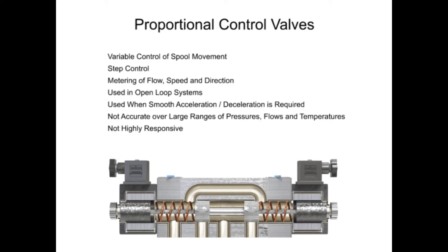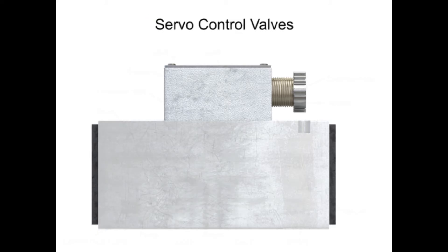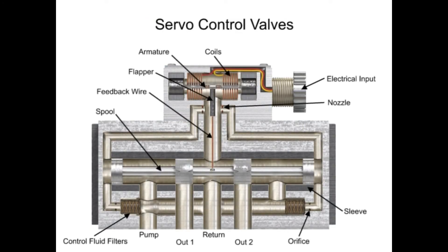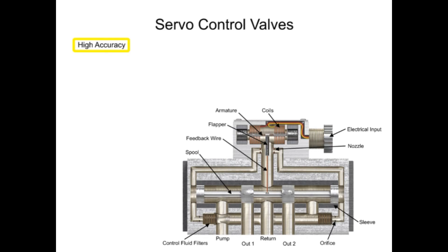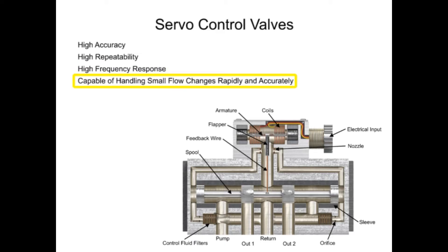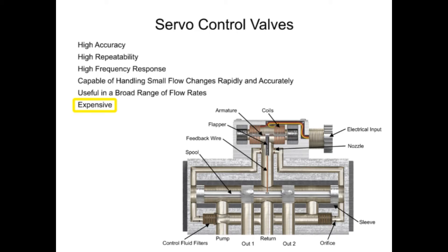The third type of hydraulic directional control technology is called the servo valve. First developed in the 1940s, servo valves operate with very high accuracy, repeatability, and high frequency response. Servo valves are highly responsive and capable of handling minuscule flow changes both rapidly and accurately over a broad range of flow rates, but at an extra cost. The main difference between proportional and servo valve circuit design is that servo systems have a method of feedback that assures the actuator is doing what the controller tells it to do.